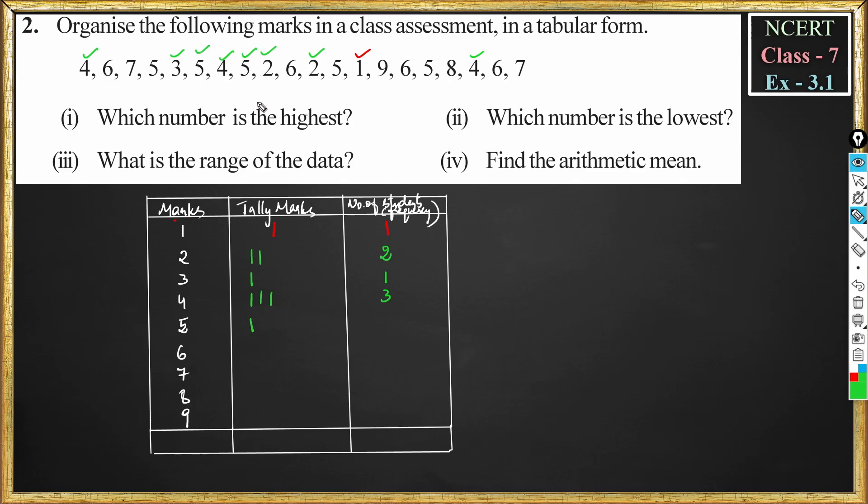Next is five. We have one here, and one more here, and again one, that is total three. Again five, that is total four. So number of students is 4. And six: we have one here and one more here, one more here, one more here, so total 4.